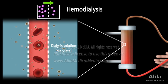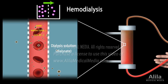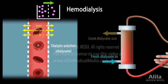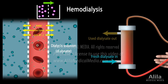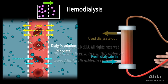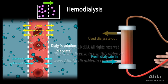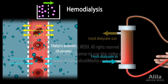The dialysis fluid contains solutes at levels similar to those in healthy blood. Urea, potassium, and other solutes that are present at higher levels in the patient's blood move out to the dialysate, which is constantly replaced and discarded. At the same time, other substances can be added to the dialysis fluid to be administered to the patient. These may include bicarbonate to adjust the patient's blood pH, erythropoietin to compensate for its low production by the failing kidneys, and certain medications.